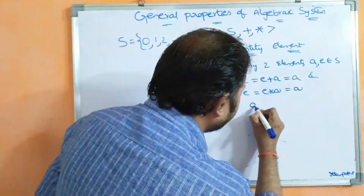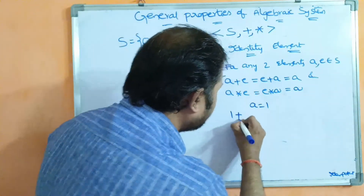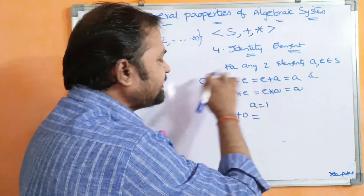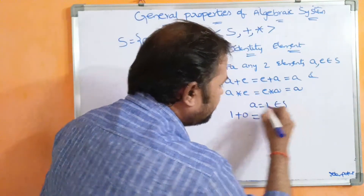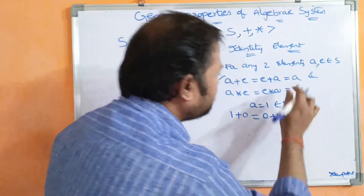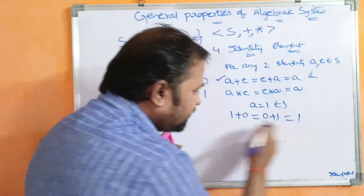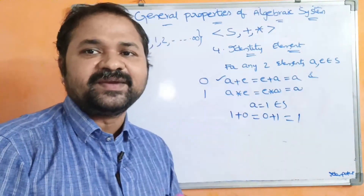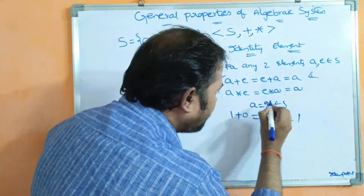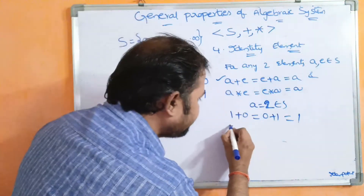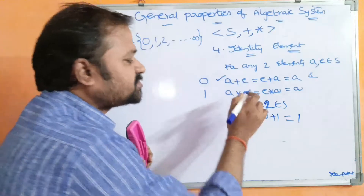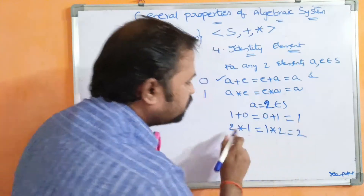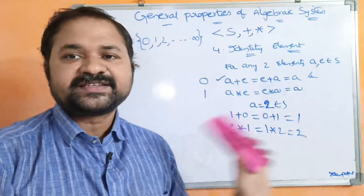Let a equal 1. For addition, 1 plus 0 equals 0 plus 1 equals 1, which is A — identity element is satisfied. Let a equal 2 for multiplication: 2 into 1 equals 1 into 2 equals 2, which equals A. So we can say identity element is satisfied.